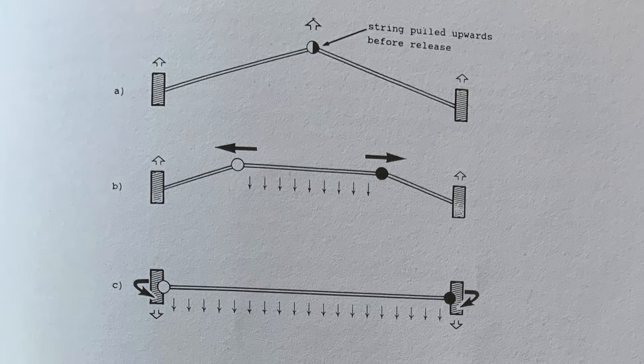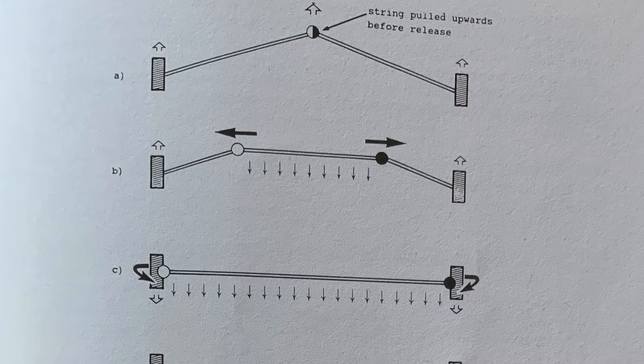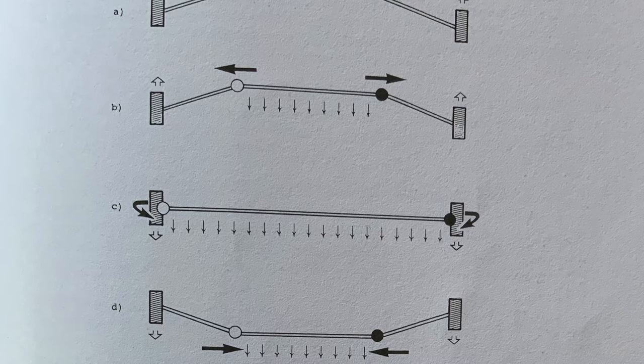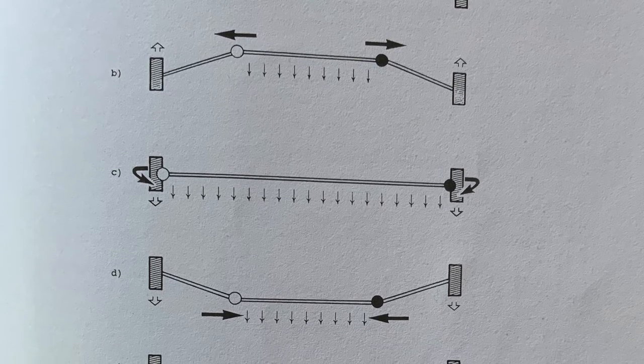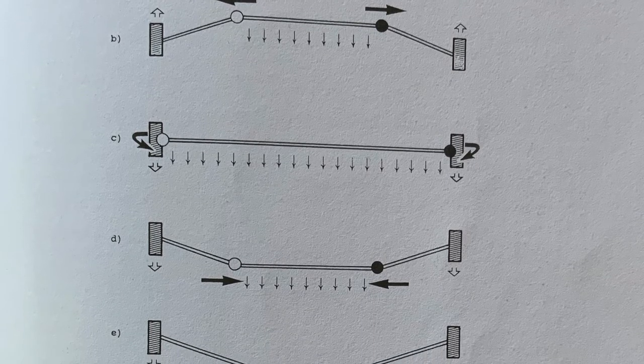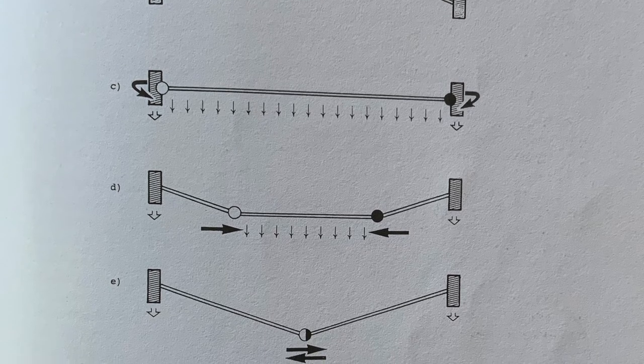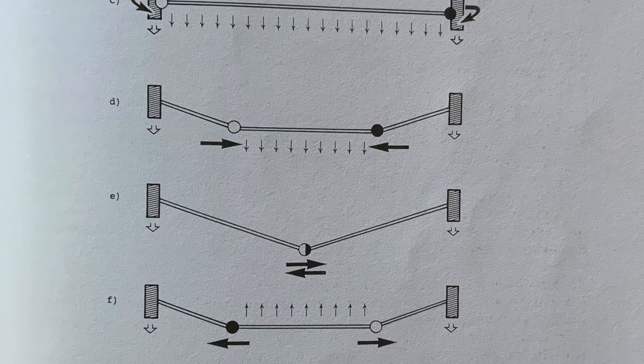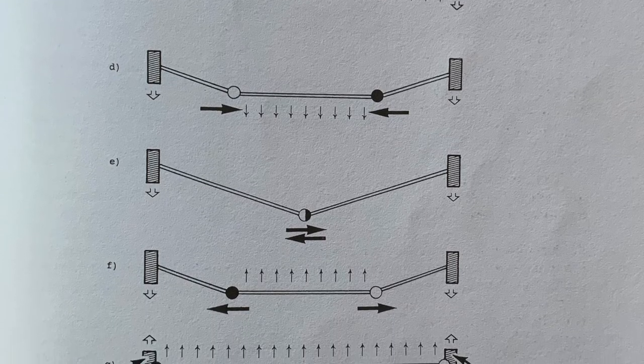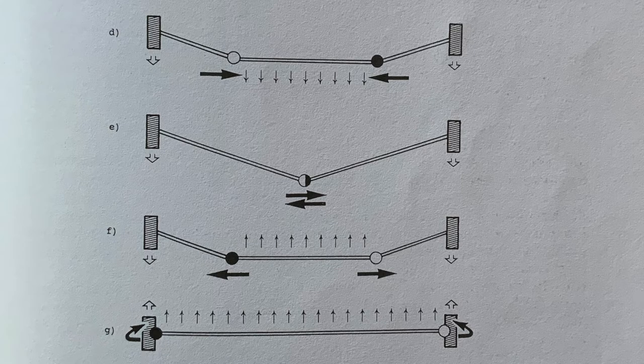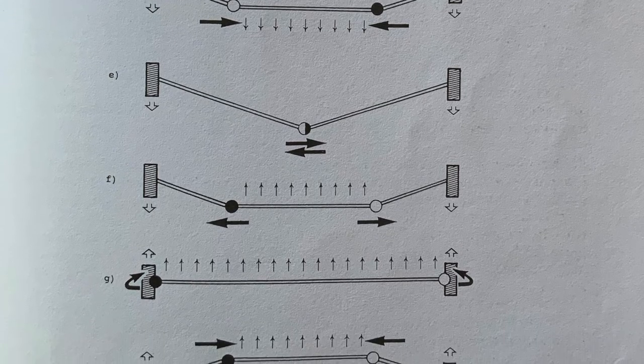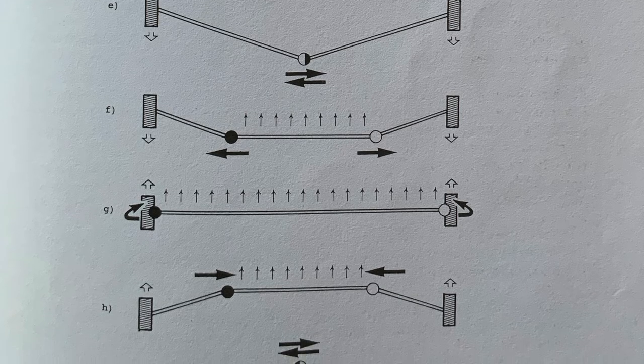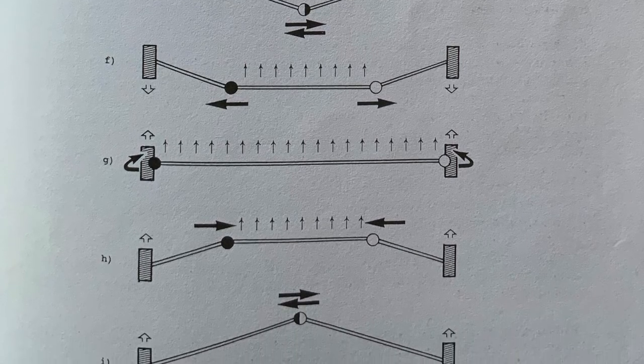So logically, if the string had been shortened by moving the fixed points nearer to one another, the time taken for one period would have been proportionately shorter because the wave tops would have had a proportionally shorter distance to travel. A shorter time per period means more periods per second, which equals higher frequency, which equals a higher note. If the length of the string is halved, the wave tops will only have half as far to go, thus doubling the frequency, which means a rise in pitch of an octave.